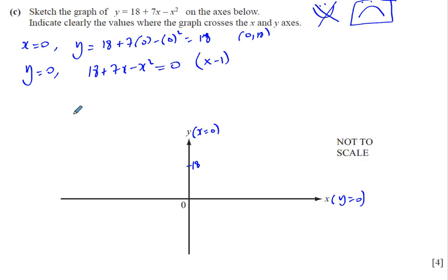I prefer to have positive in front of x squared, which just makes it a bit easier to factorize. So what I could do is I could multiply both sides of the equation by minus 1, and it won't change the equation. I'll keep the equation the same. I'm doing the same thing to both sides. So I'll have x squared minus 7x minus 18 equals 0. 0 times minus 1 is still 0. And then I can solve by factorizing.